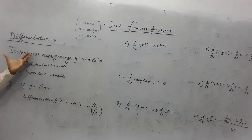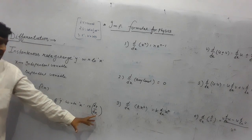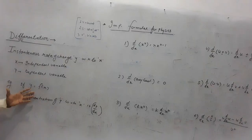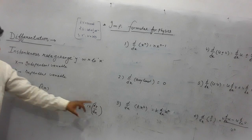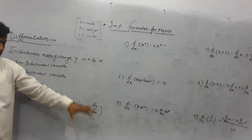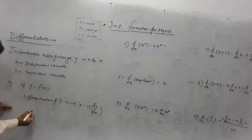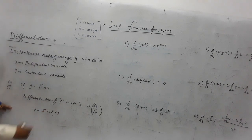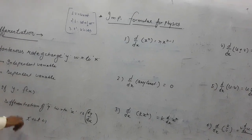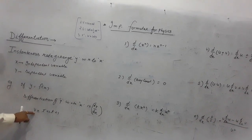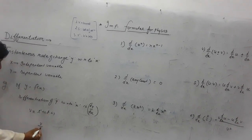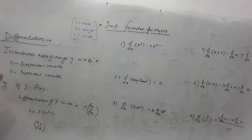To write differentiation, we use the term dy/dx — the dependent variable in the numerator, and the independent variable in the denominator. For example, if v = t² + 2t + 1, here v is the dependent variable and t is the independent variable, so we write dv/dt as the differentiation form.